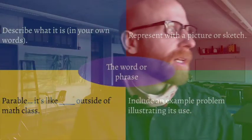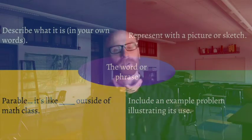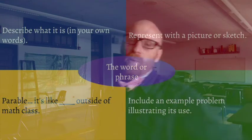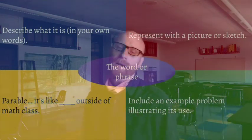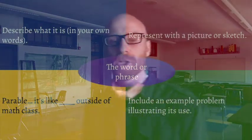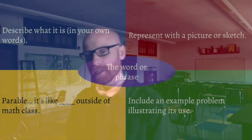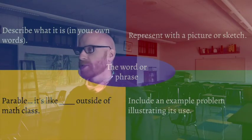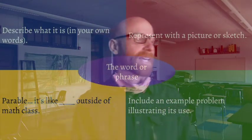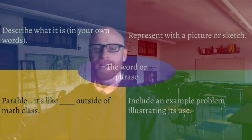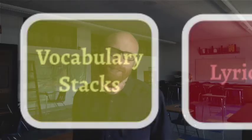You'll put the word or phrase, the vocabulary term, in the center. In one section you're describing what it is, kind of a definition but in your own words. Another box, you will represent that thing with a picture. In another box you're gonna come up with an example problem or find an example problem to illustrate where the word might be used. And the last box is to make a connection between that word and something non-academic, something outside of school, outside of math class. That happens seven times. That's why it's called a vocabulary stack.